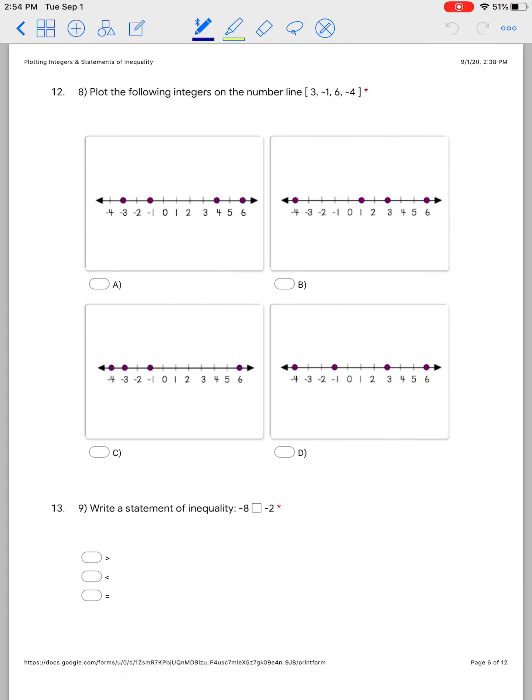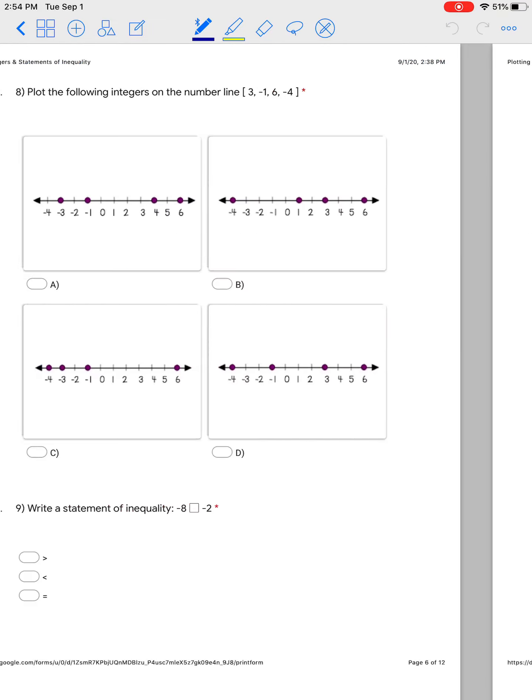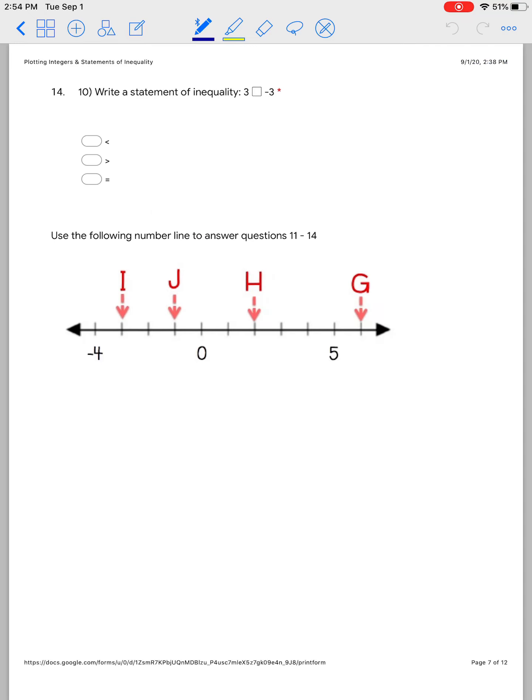Same thing for number 12. And then on number 4, or sorry, not number 12, it's actually number 8. Sorry. Number 10, you're going to do the exact same thing. You're going to write your statement of inequality and then you're just going to put 3 and negative 3 on the number line to justify your answer.